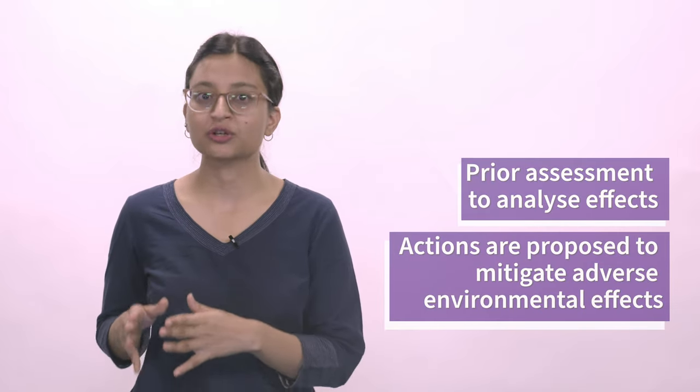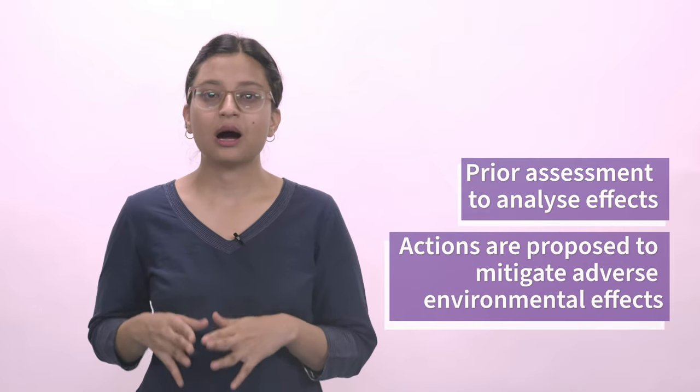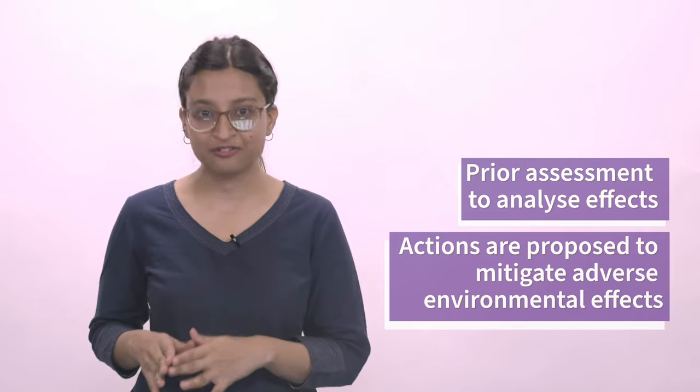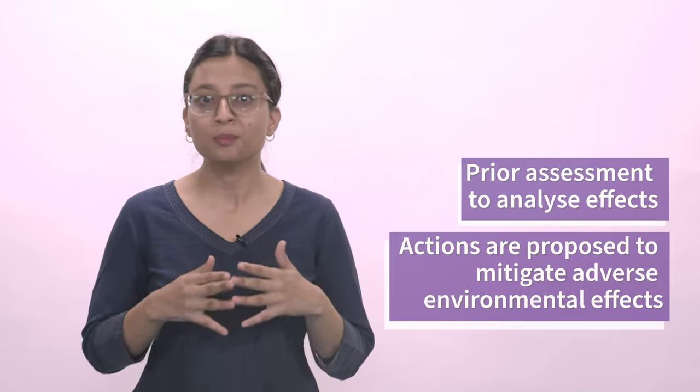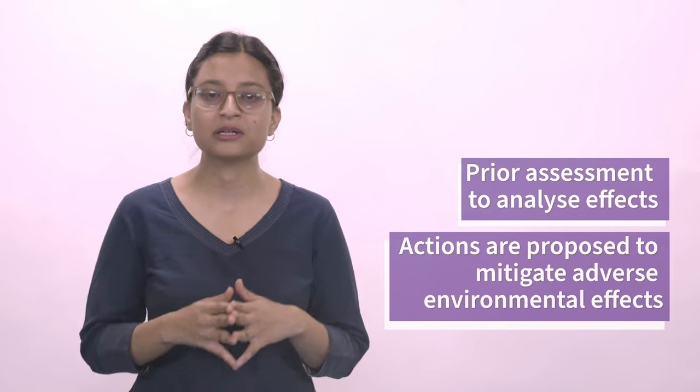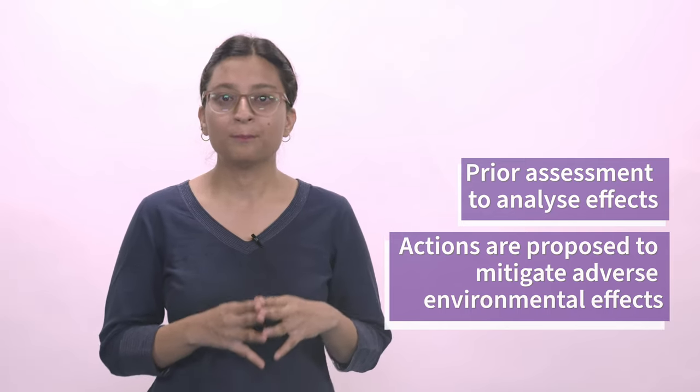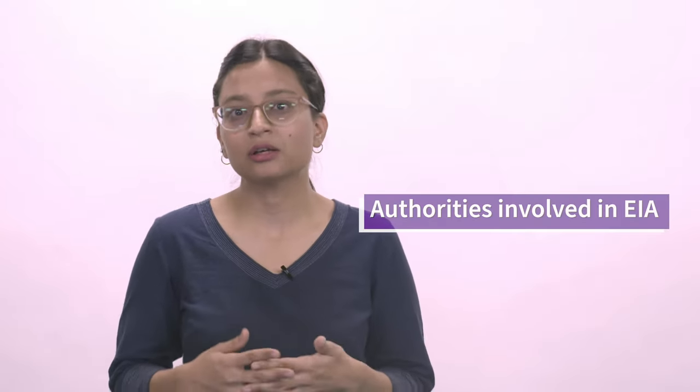The process under EIA involves conducting a prior assessment to analyze the effect of a project on the environment. After analyzing the possible effects, measures or actions are proposed to mitigate its adverse environmental effects. Based on such assessment, suggestions can be made either to grant a prior environmental clearance, deny it, or impose certain conditions on such grants. Before delving into the process involved in EIA, we should understand the authorities involved.